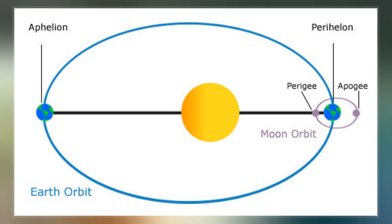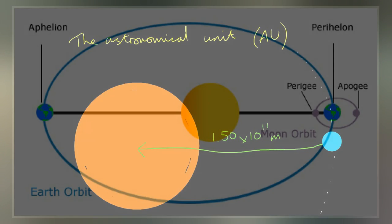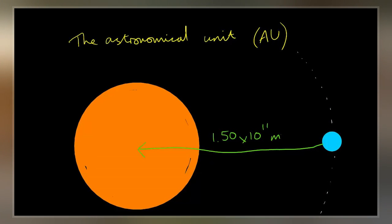However, that distance varies as Earth orbits the Sun, from a maximum to a minimum, and back again once a year.